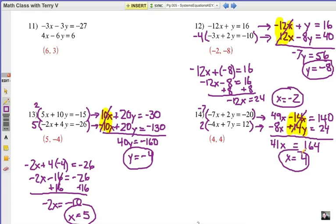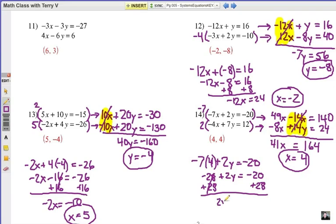Big number, but it looks like we have a simple answer of a positive 4. Now substituted in there, again look for a way to keep to some smaller numbers. How about that first equation? So negative 7x, but x is 4, plus 2y equals negative 20. That would be negative 28, plus 2y equals negative 20. Let's add 28 to each side. And I'm going to get 2y equals 8, then y must be 4.